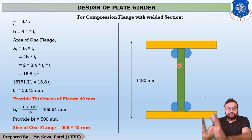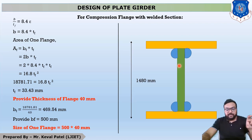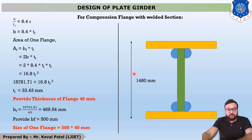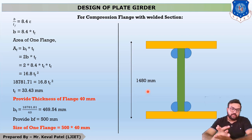Our trial-and-error section is now ready: flange width = 500 mm, flange thickness = 40 mm, web depth = 1400 mm, web thickness = 12 mm. The total depth D = 1400 + 40 + 40 = 1480 mm. This is our trial section.